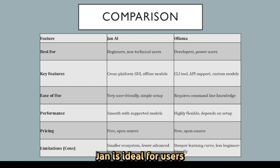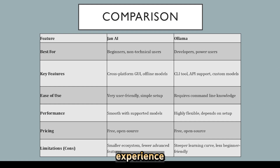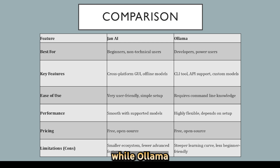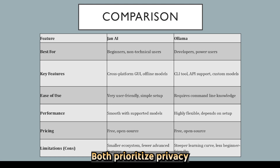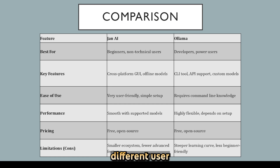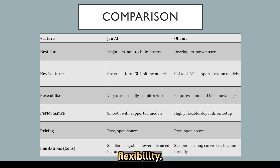Now, let's compare them side by side. Jan is ideal for users who want a straightforward, user-friendly experience running AI locally, while Olama shines for developers who want more control and integration options. Both prioritize privacy and local execution, but they serve different user types. Simplicity versus flexibility.